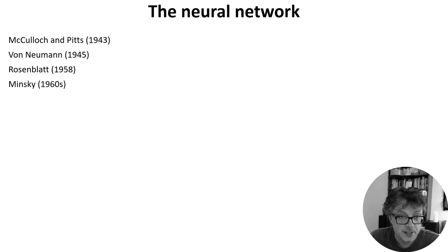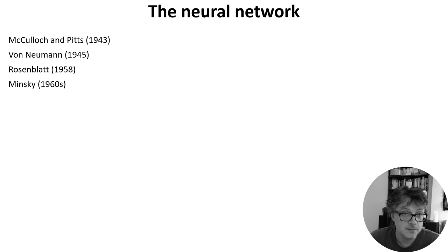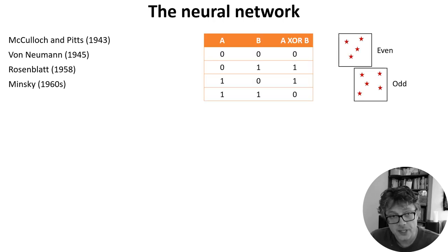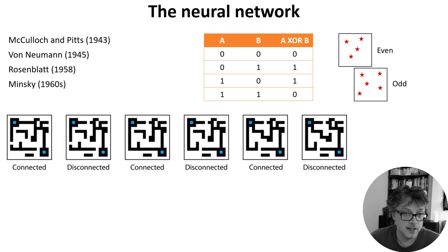The next development I have to talk about is Minsky's criticisms of the perceptron. I won't say much about this since it doesn't bear directly on neuroscience, but it feels wrong not to mention it at all. During the 1960s Marvin Minsky started criticising the perceptron, ultimately leading to a book in 1969 that's credited with ending funding for neural network research and setting the field back for decades. His argument was that a single layer perceptron could only implement a linearly separable function and therefore couldn't compute functions like exclusive or, or evenness, or connectedness.